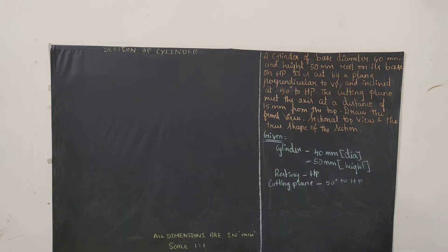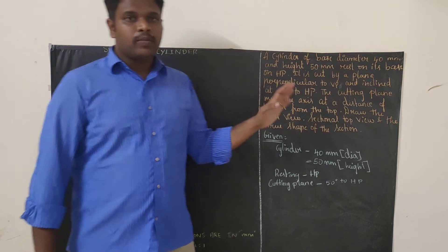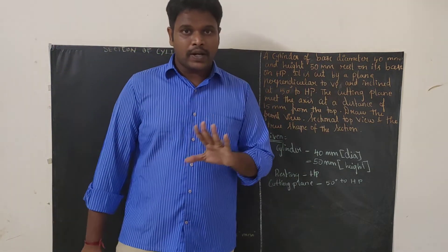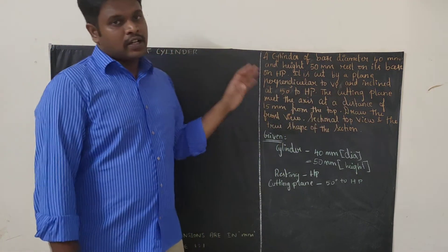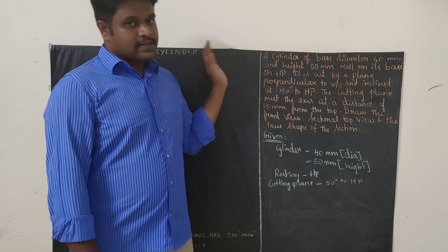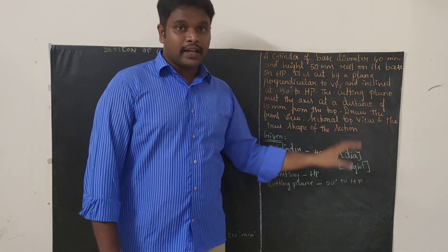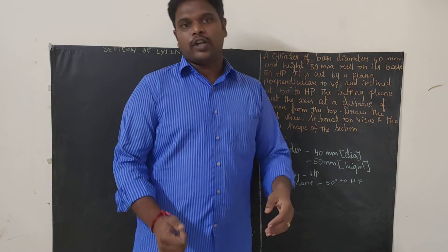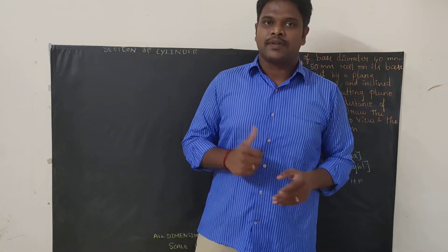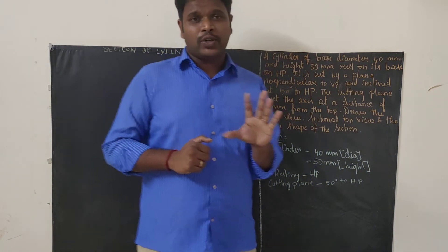Hello friends, welcome to our channel Mechanical Motivator. In this video we're going to see a problem on section of solids, coming under Unit 4 in Engineering Graphics. The topic is section of a cylinder. Initially I will be explaining the question, then how to write the given data, and later on how to draw the diagram step by step.